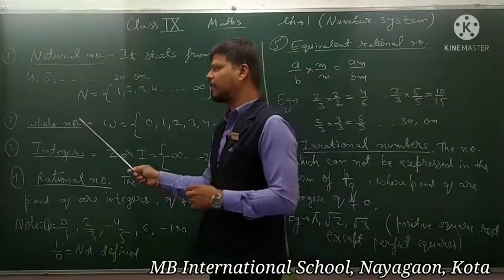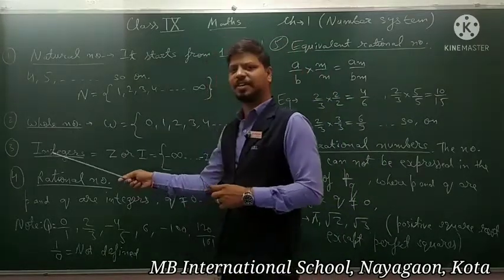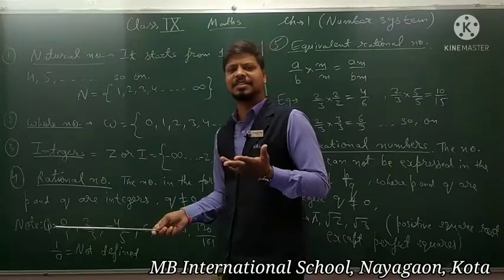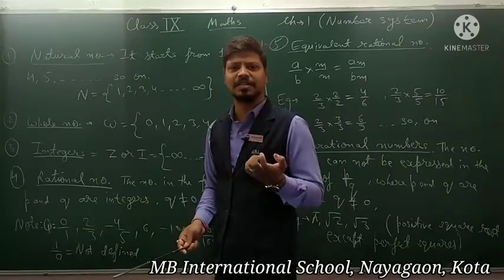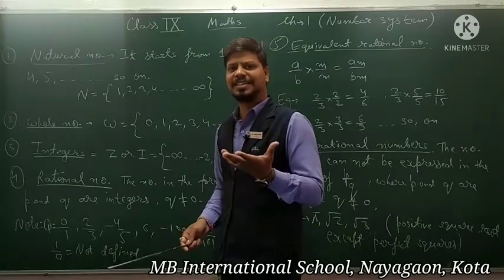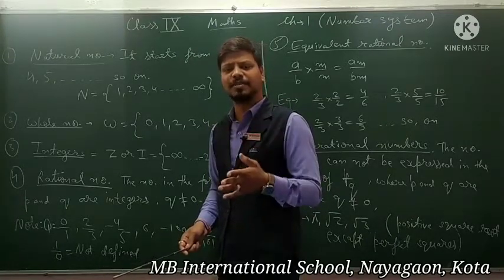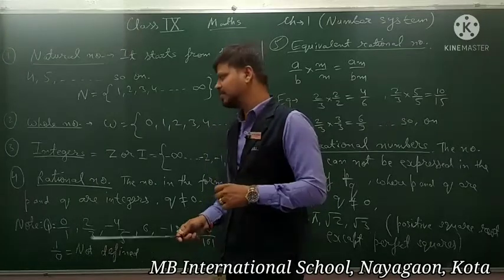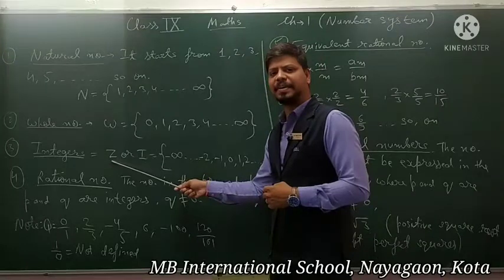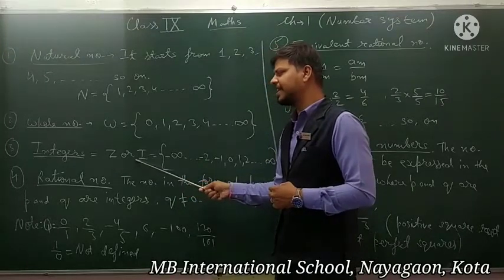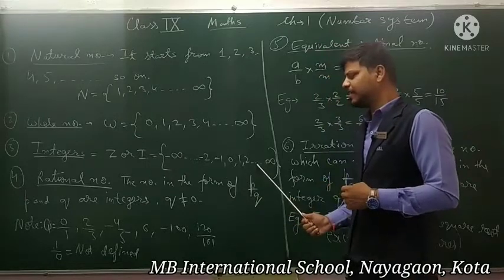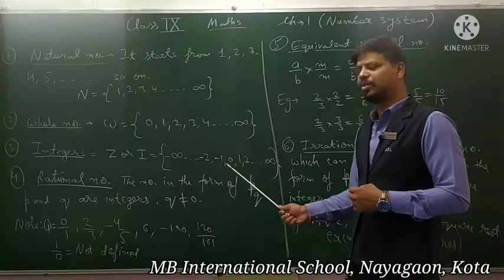Now after whole number, we discuss another category of numbers, that is integer. What is the integer? Integer is nothing but it is a collection of negative numbers, positive numbers, including zero. Integer is represented by capital Z or capital I, and it is a group of negative numbers, positive numbers, and including zero.